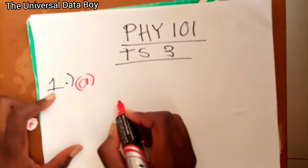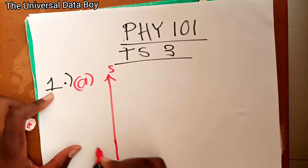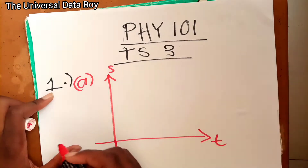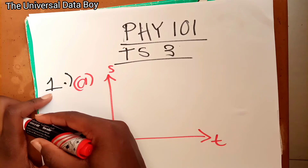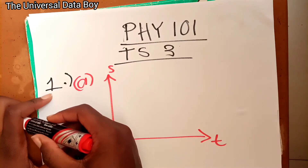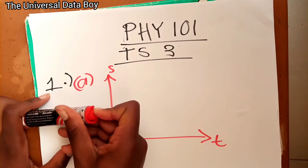For part (a), we draw a speed-time graph with speed on the vertical axis and time on the horizontal axis. She drives at 80 km/h for 30 minutes, but these are different units — kilometers per hour versus minutes — so I need to convert 30 minutes into hours. It's easier to convert 30 minutes to hours.